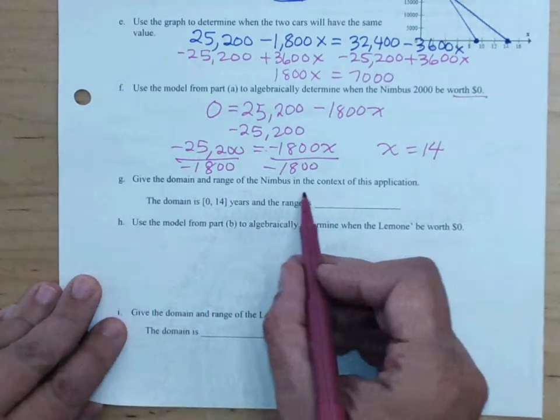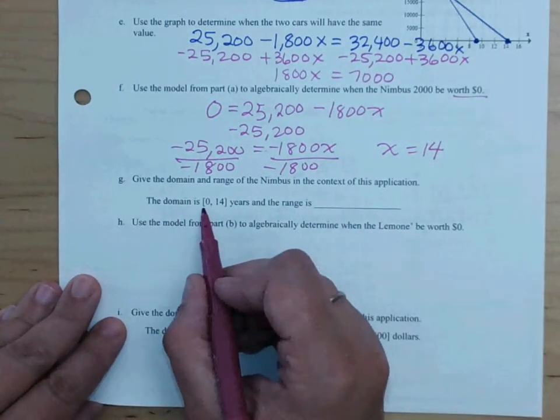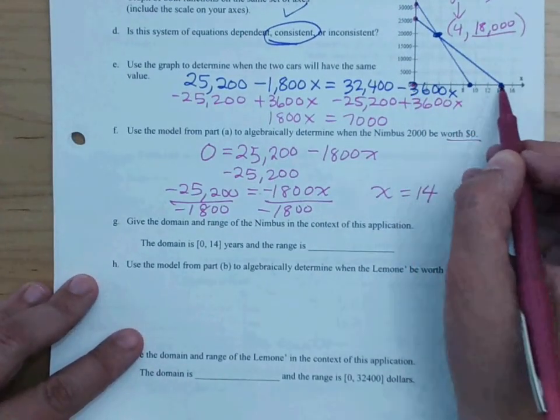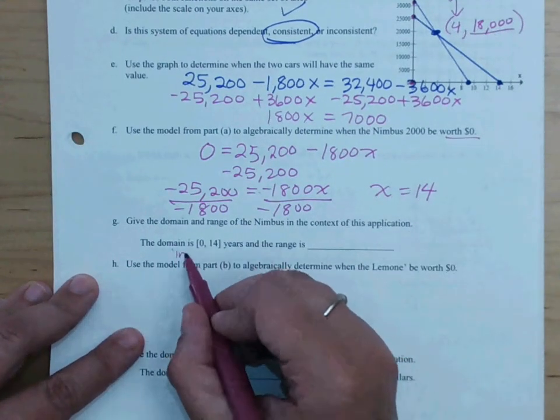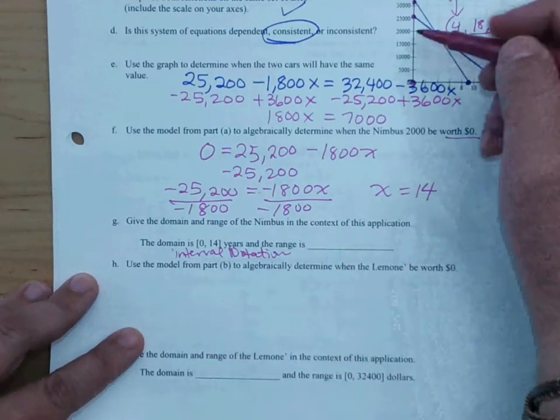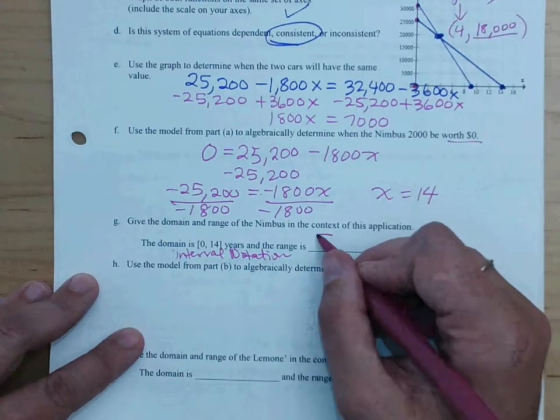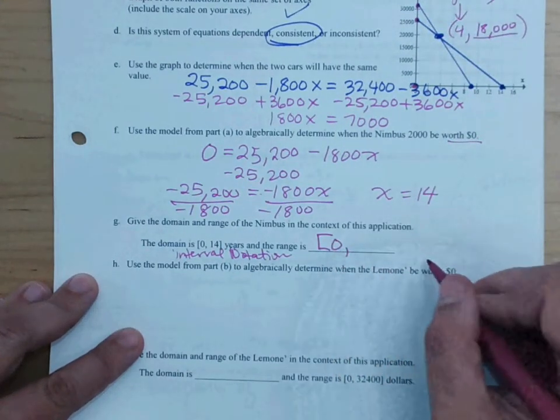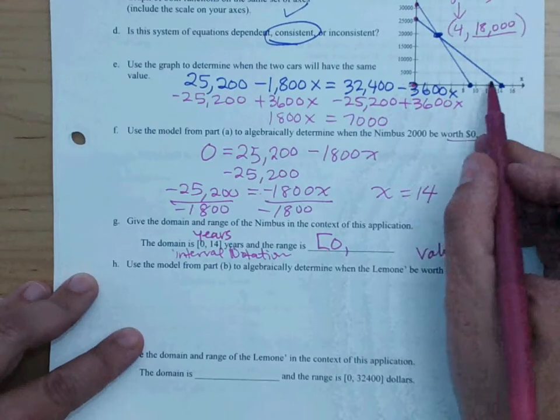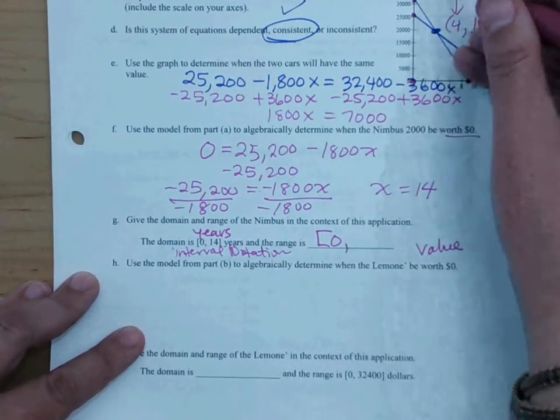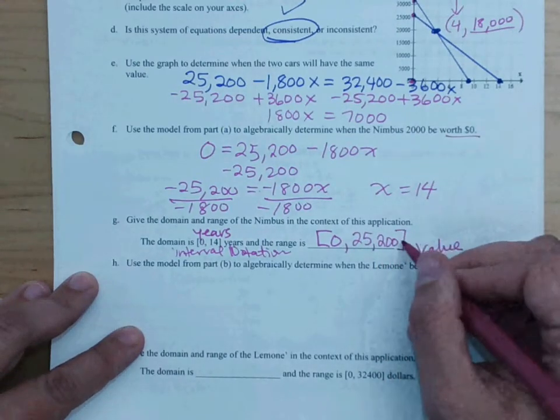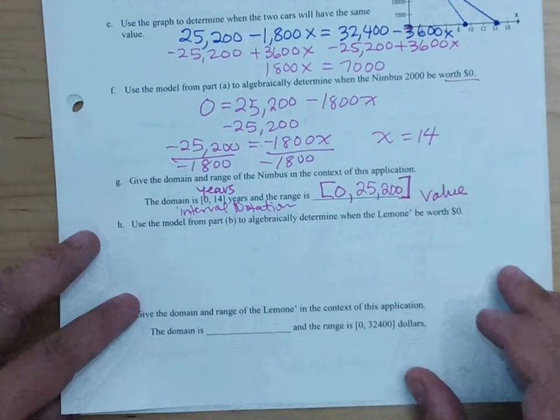Give the domain and the range of the Nimbus. The domain is [0, 14]. Why is that? Because we start out at year zero, and it has no value after 14 years. So this is what we call interval notation. What would the range be? Well, the range is going to be from zero, a value of zero. The range is the value. The domain is the years, because the domain is the x values. What's the maximum value of the Nimbus? $25,200. And these numbers are included, which is the reason why we have brackets on them.